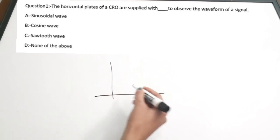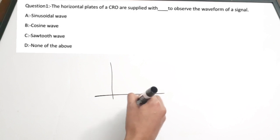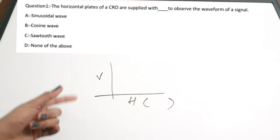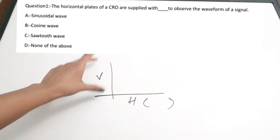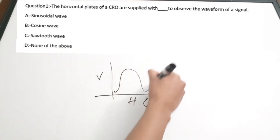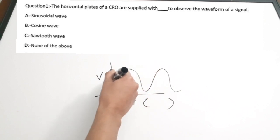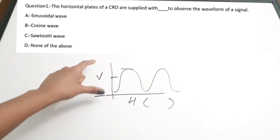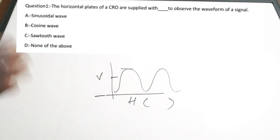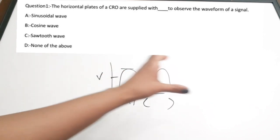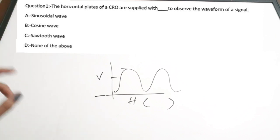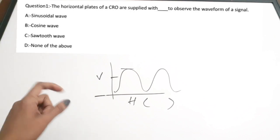In a CRO there are two plates — horizontal and vertical. The horizontal axis corresponds to time, which is internally generated. The vertical axis represents the voltage level of the signal, and it is externally supplied by the waveform through the CRO probe.